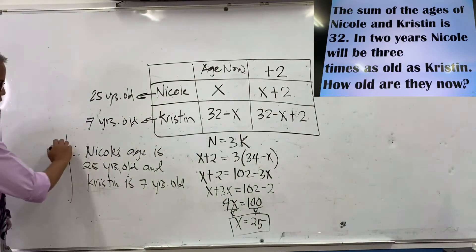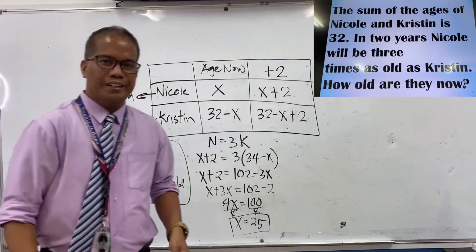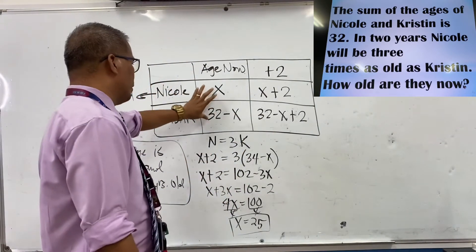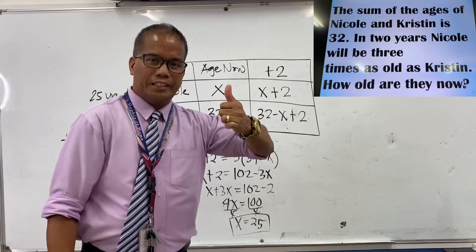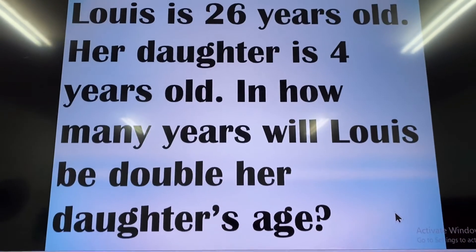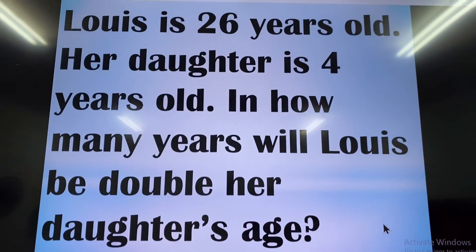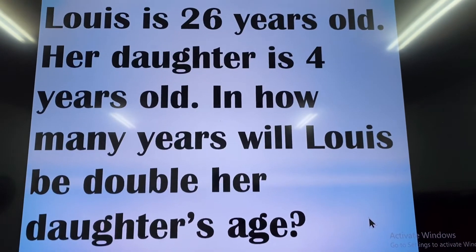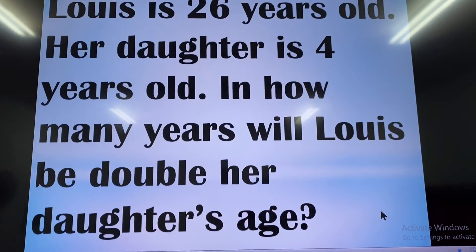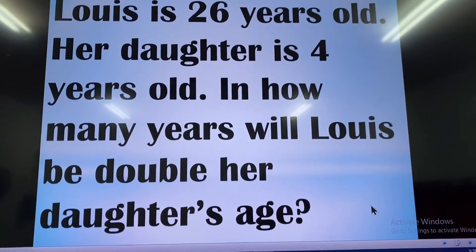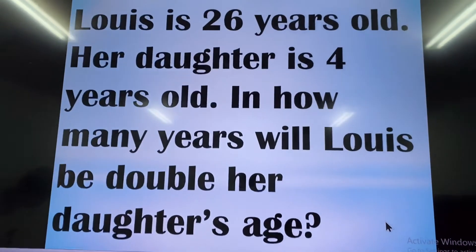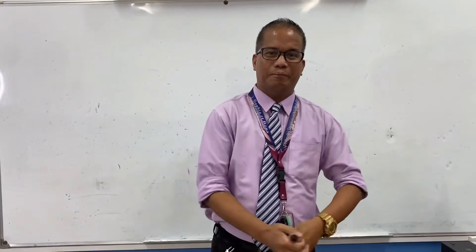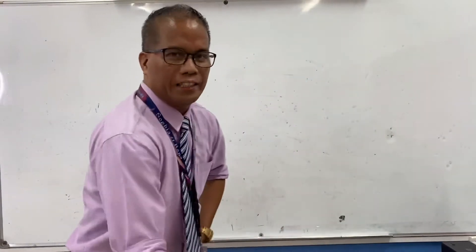So that's the answer for the sum of ages problem. The last question is also an age problem: Louise is 26 years old and her daughter is 4 years old. In how many years will Louise be double her daughter's age? Let's show the solution.